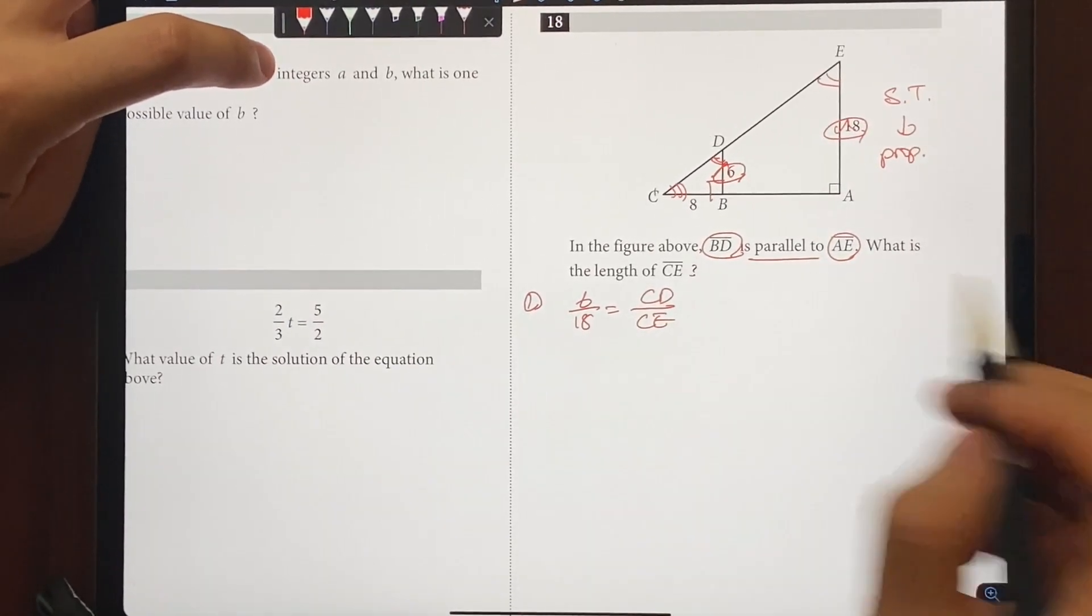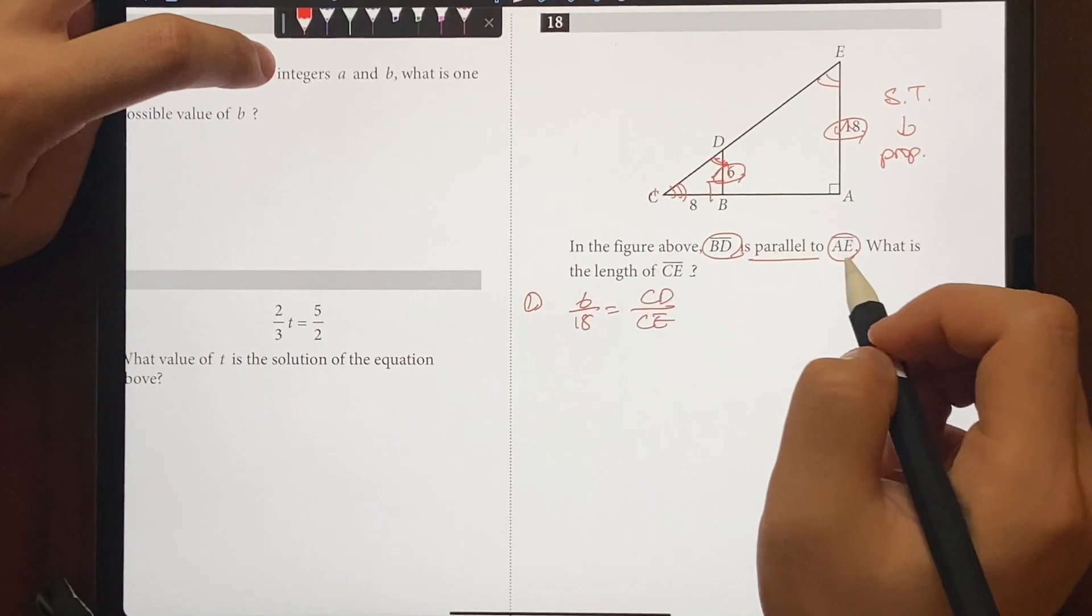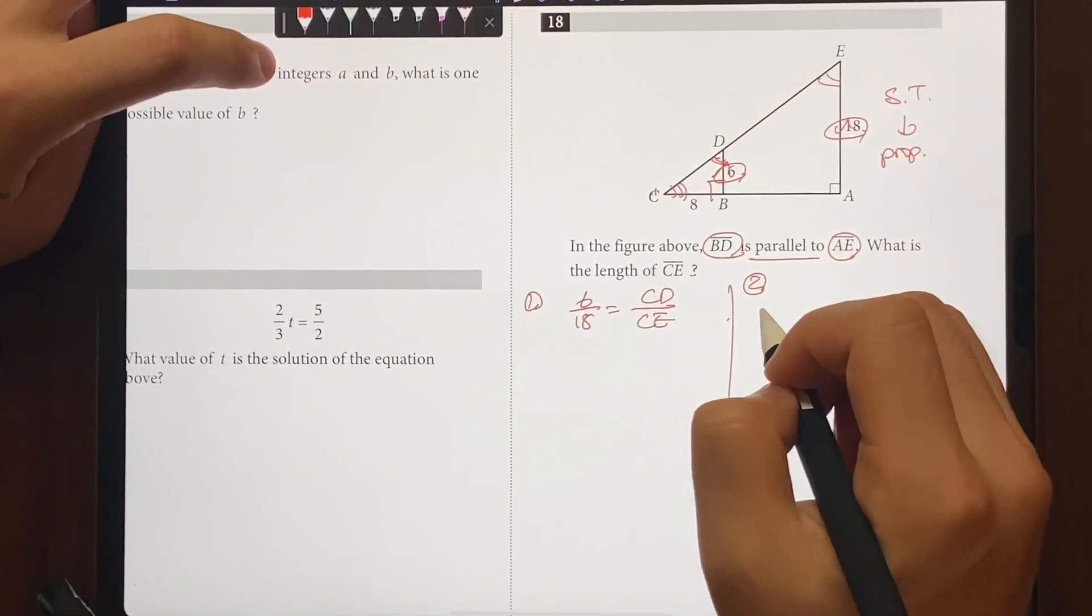So CD over CE. And to find CE, we need to know what CD is. So how do we find CD? Well, it's a right triangle, so we can do Pythagorean theorem.